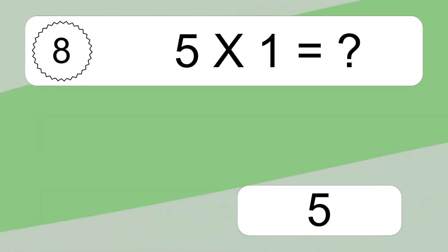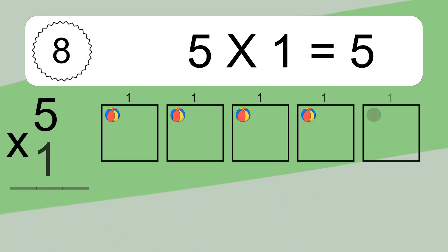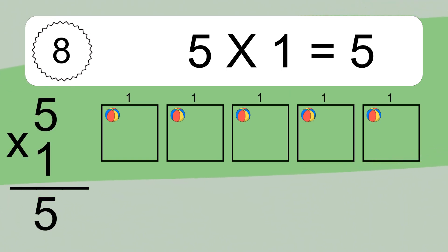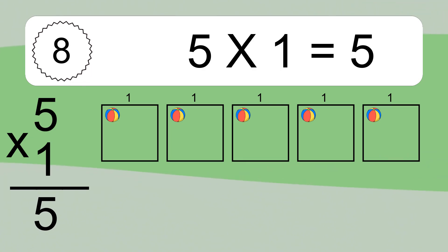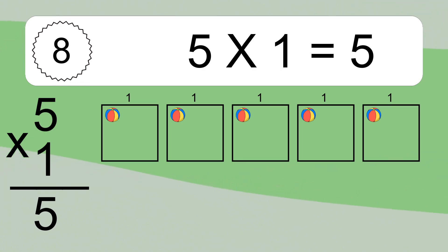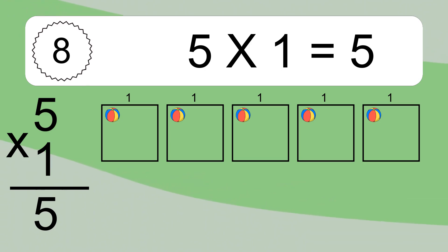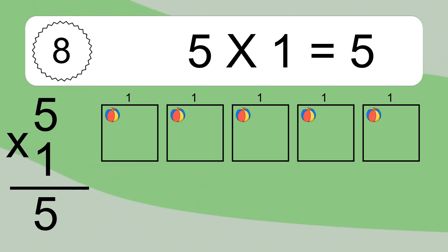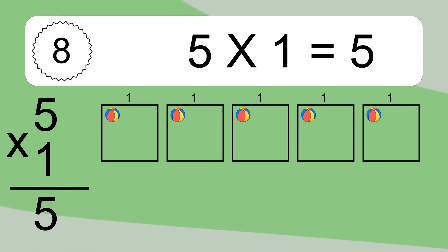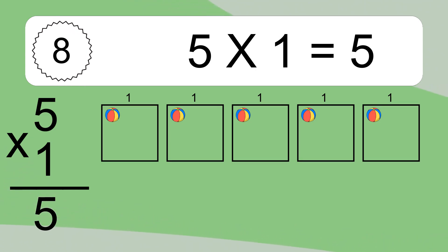5 times 1 equals what? 5 times 1 equals 5. We have 5 boxes, and each box has 1 colorful ball inside. If you count all the balls in all the boxes together, you will have 5 times 1 balls. This equals 5 balls.